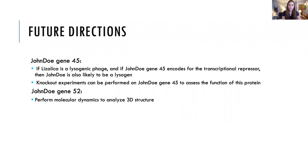For John Doe gene number 52, we would also want to perform a molecular dynamics experiment to analyze its 3D structure. With this, we can analyze the structure more carefully and find out how similar or different it is to other HFQ proteins.